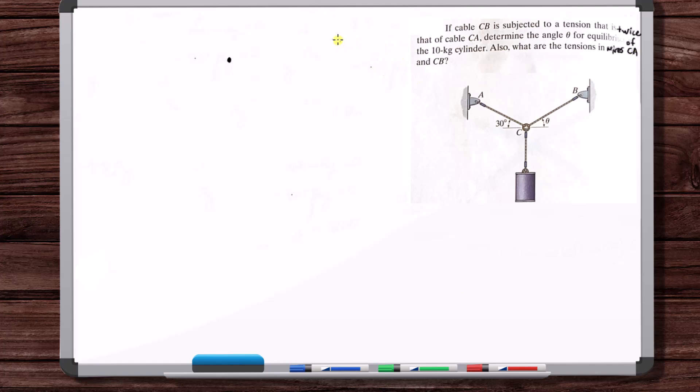Okay, so first of all, what is the weight of the cylinder? We know that the weight of the cylinder is just M, so 10 times 9.81, so this is just 98.1 Newtons.